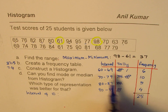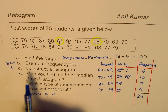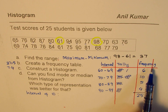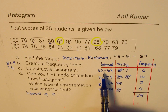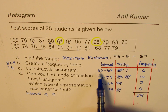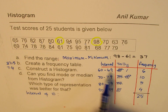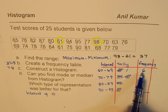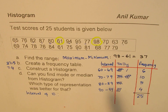This is our frequency table. To summarize: to create a frequency table, it is important to decide on the interval first. Once you decide on the interval, you count how many data elements fall in each interval — that gives you the frequency table.